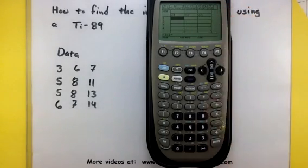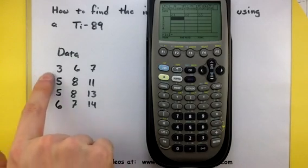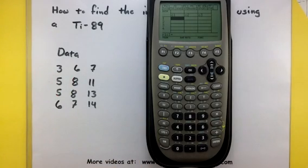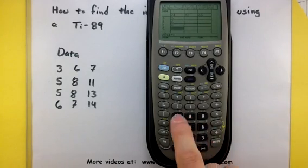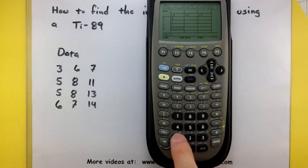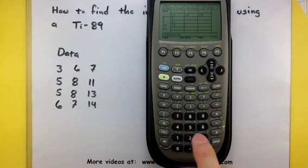And I'm brought to this screen, known as the Data Matrix Editor. It looks kind of like an Excel sheet. And we start entering in our data one by one. So 3, 5, 5, 6, 8, 8, 7, 7, 11, 13, and 14. There we go.